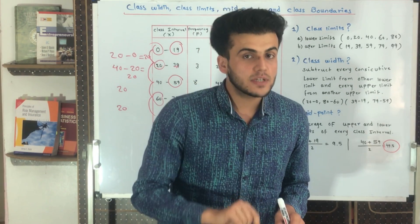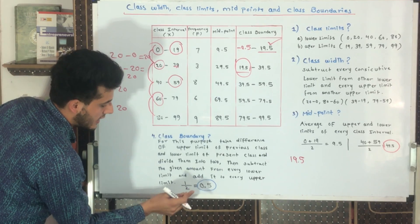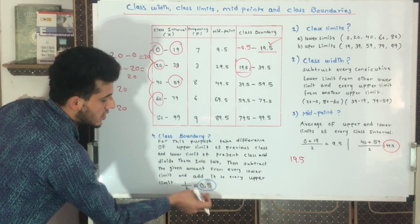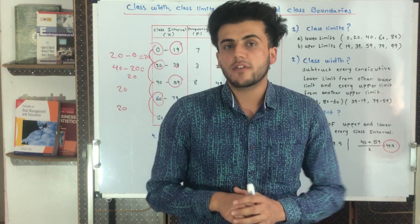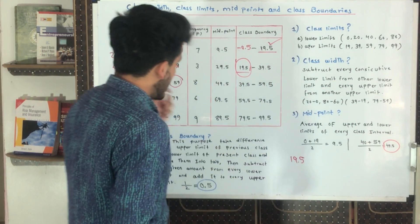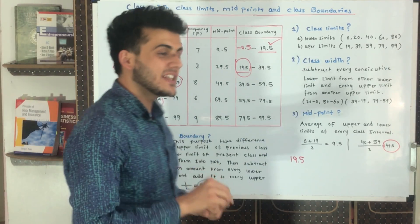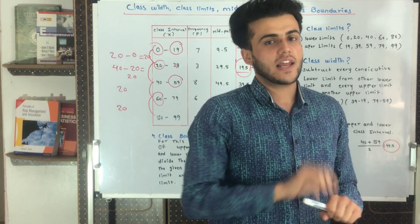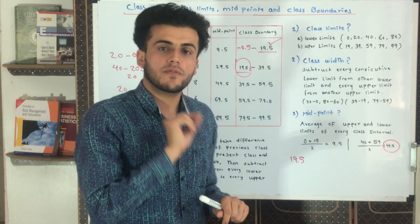After finding that number, we divide it by two because we need one upper limit and one lower limit. We divide one by two and the result is 0.5. Now, what do we do with 0.5? We add this 0.5 to every upper limit of every class interval, and we subtract it from every lower limit of every class interval.